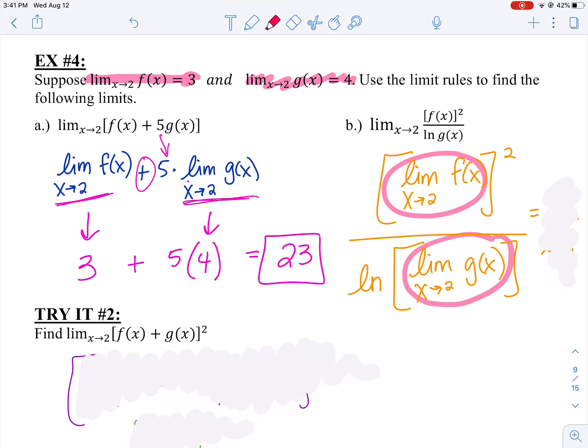And what is the limit as X approaches two of G(X)? Four. And then I can apply the natural log. So I can say nine divided by the natural log of four. And depending on how they want your answer, making sure you read the directions, you can put that in your calculator and round it to a certain decimal place. Or if they asked you for exact answers, you can leave it just like that. Nine divided by the natural log of four.